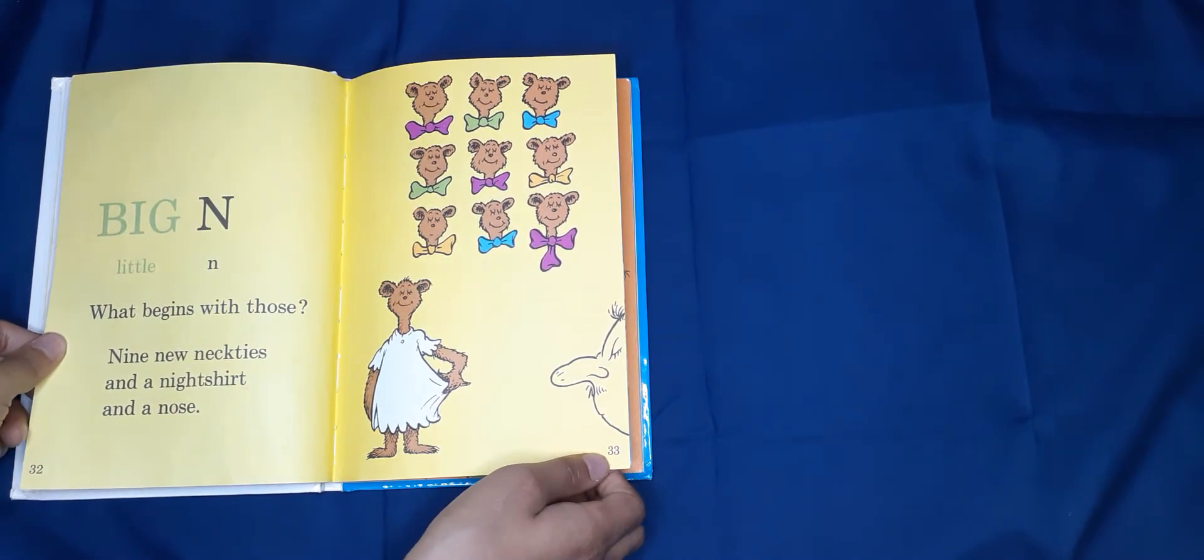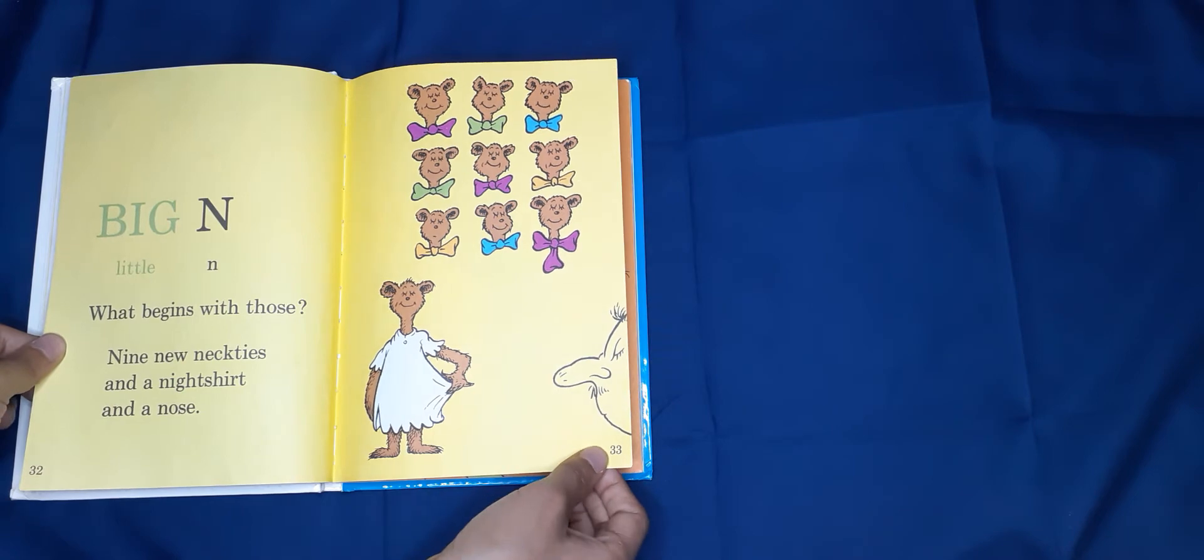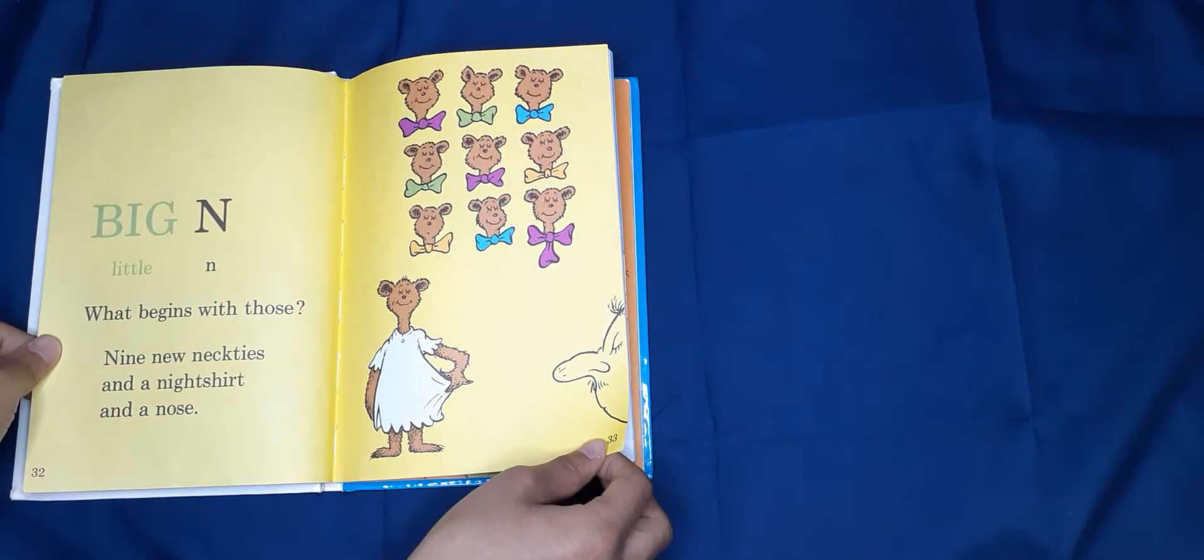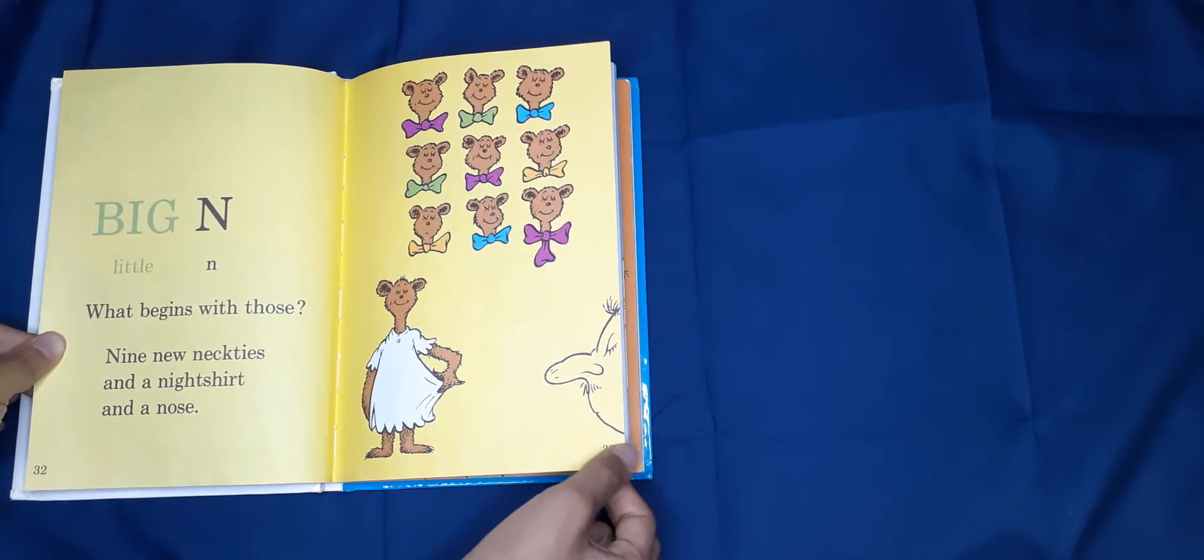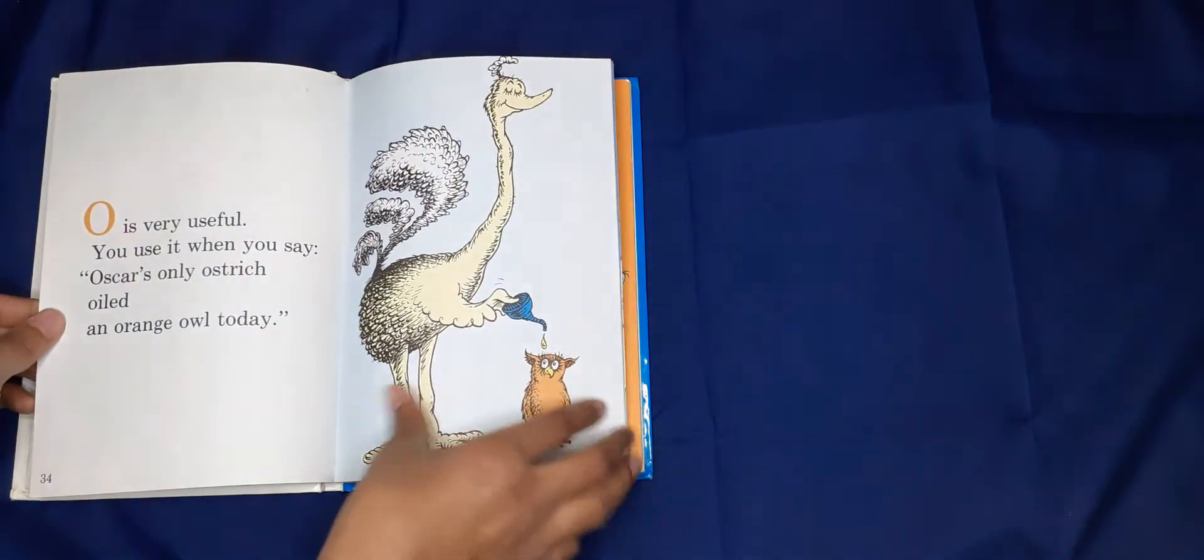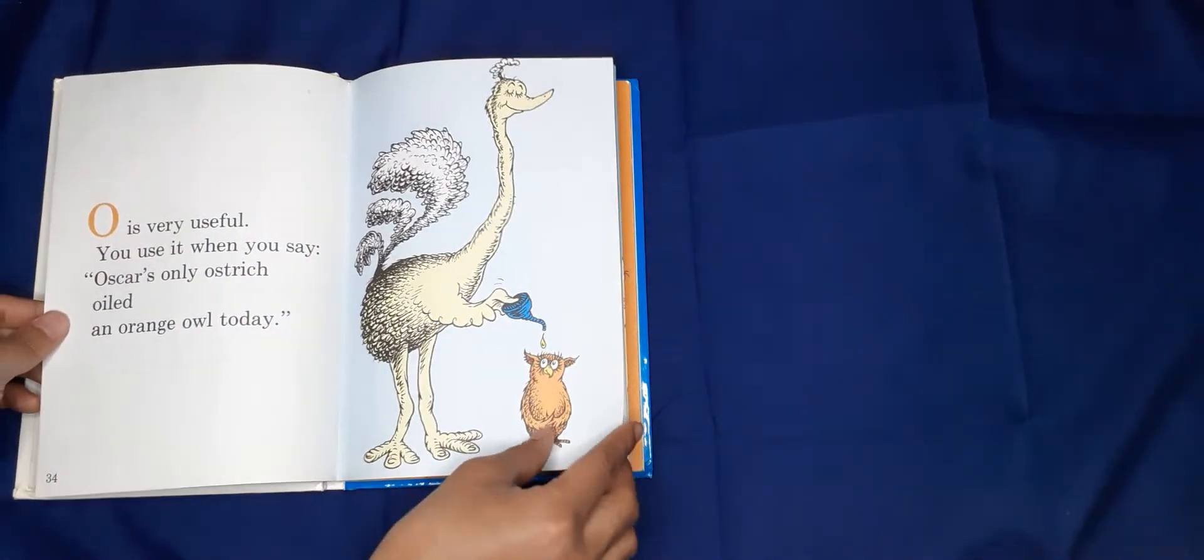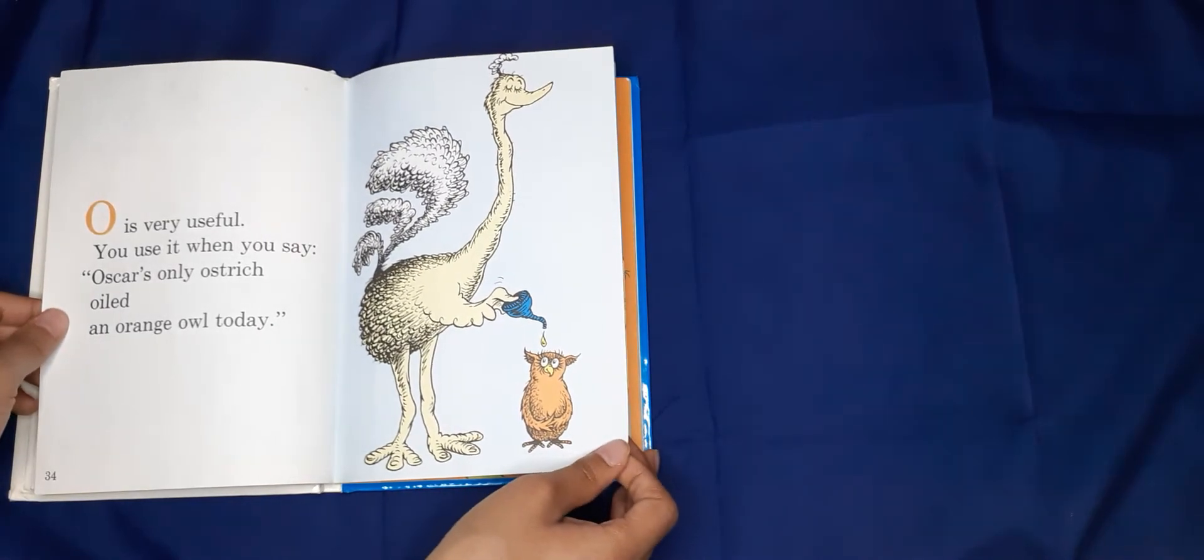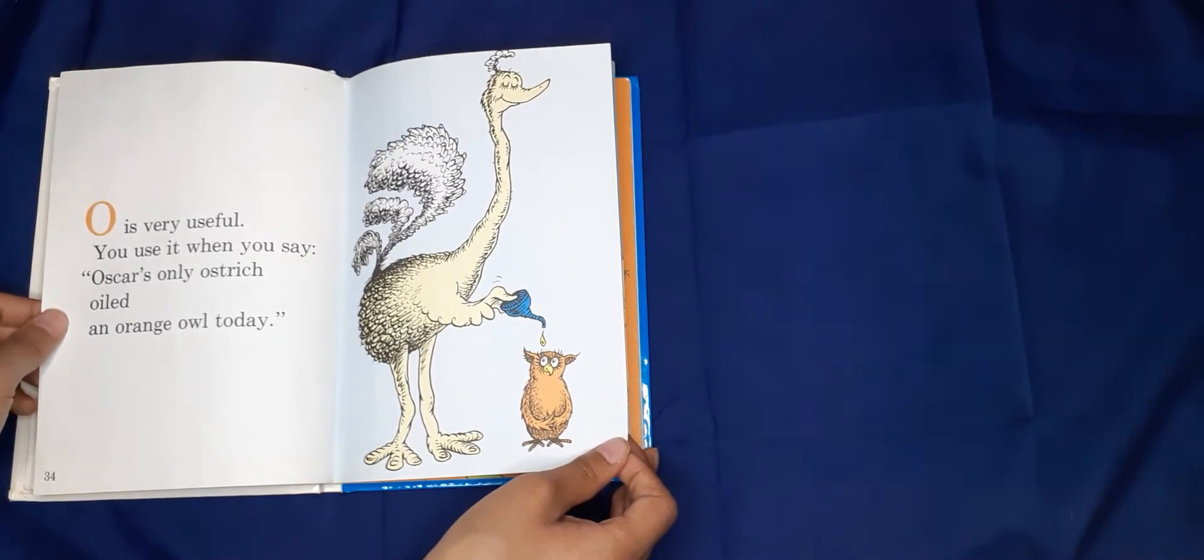What begins with those? Nine new neckties and a nightshirt and a nose. O is very useful. You use it when you say Oscar's only ostrich oiled an orange owl today.